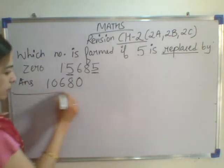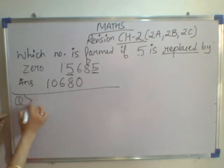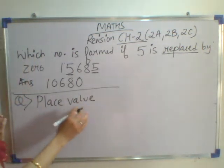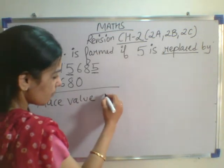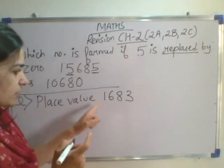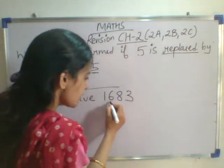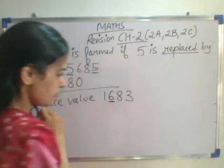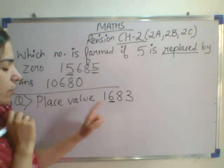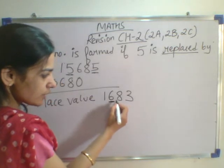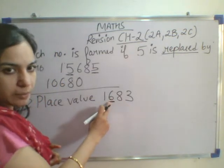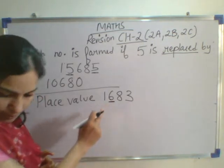The next question is about place value. You have to tell the place value of the underlined number in the given number. Which number is underlined? 6. So what is the place value of 6? You will be counting from the right: 1s, 10s, 100. The place value of 6 is 100 because it is at the 100s place.